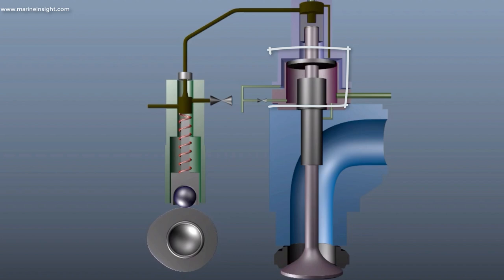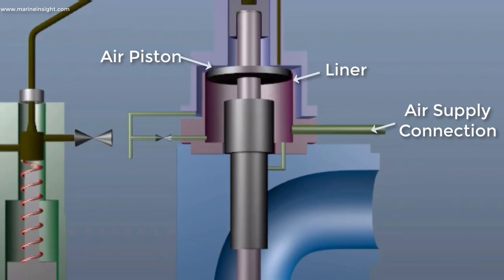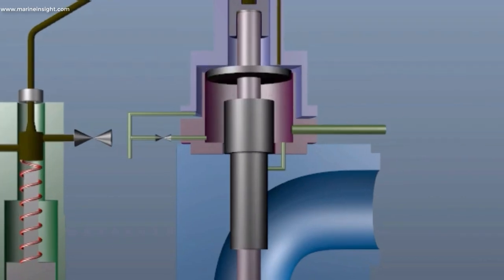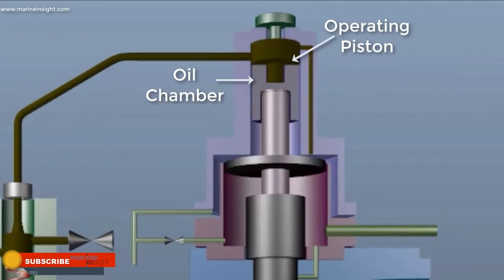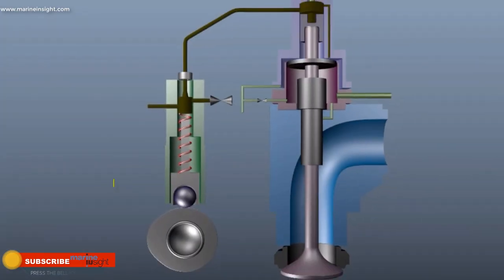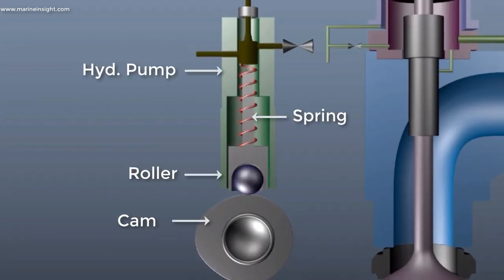There is a spring air piston chamber which has an air supply connection. Hydraulic oil chamber and operating piston is on the top of the valve spindle. Hydraulic oil pump which is operated by the cam.